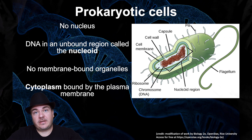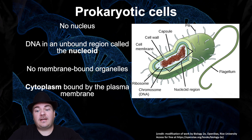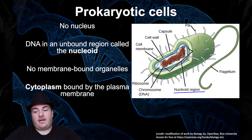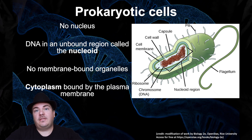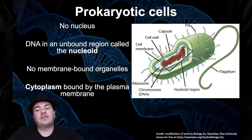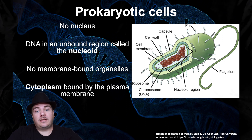Prokaryotes also have the cytoplasm, the fluid inside the cell, and they have a plasma membrane that separates the cell from its environment. They have ribosomes — the little workbenches where proteins are built. On top of that, bacteria and prokaryotes also have, outside of their plasma membrane, a cell wall: a thick, rigid structure that acts like a wall and protects the cell from the environment it's living in.